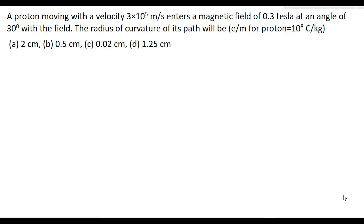A proton moving with a velocity 3 into 10 to the power 5 meter per second enters a magnetic field of 0.3 tesla at an angle of 30 degrees with the field.